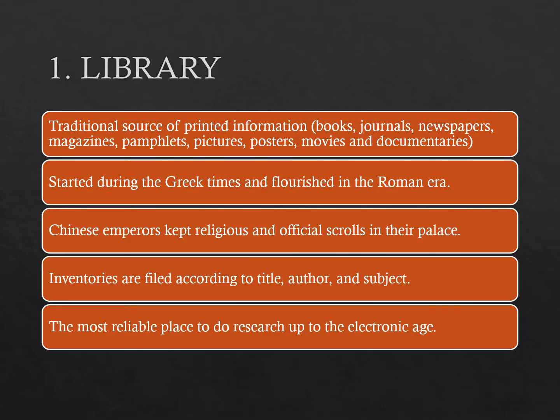The library is a traditional source of printed information — books, journals, newspapers, magazines, pamphlets, pictures, posters, movies, and documentaries. A library started during the Greek times and flourished in the Roman era. Chinese emperors kept religious and official scrolls in their palace. Inventories are filed according to title, author, and subject. The most reliable place to do research up to the electronic age is in the library.